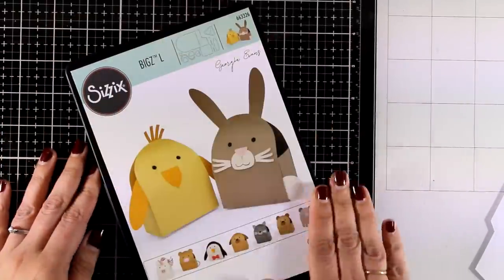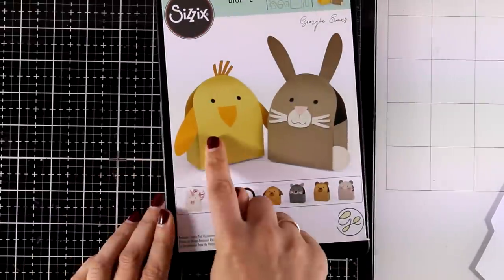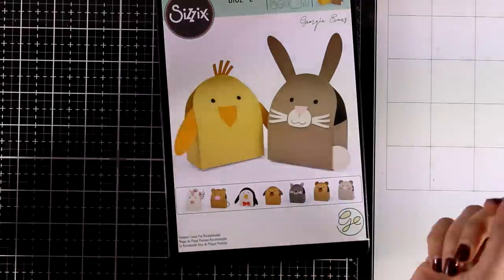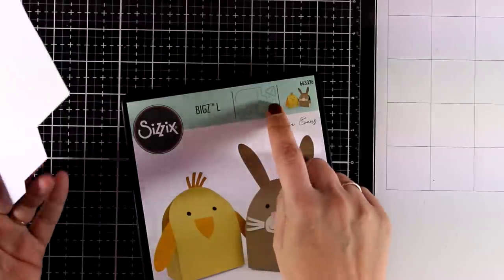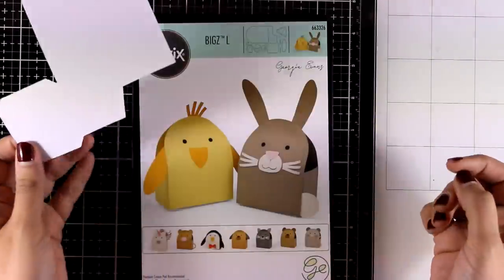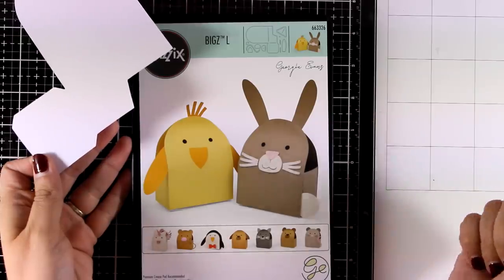Now this die cuts out a basic shape which you have to cut out twice to create the box. Then there are a bunch of other dies that you can cut out and mix and match to create all the different animals. The different cutouts can be used in many ways, which I'm going to show you in this video.